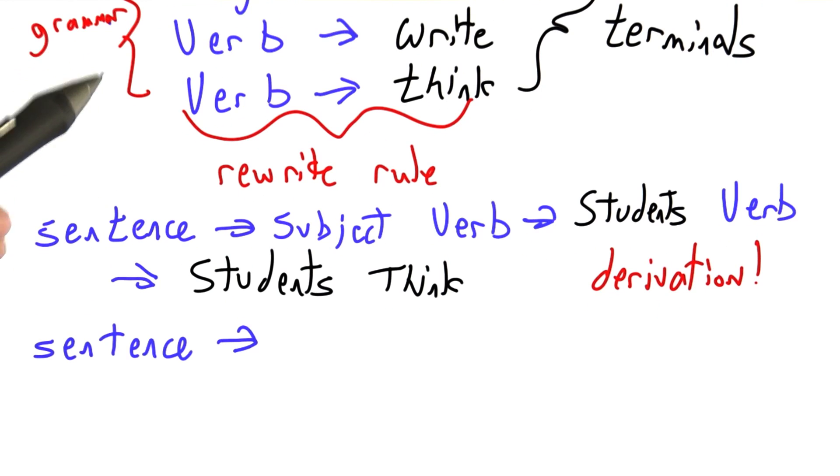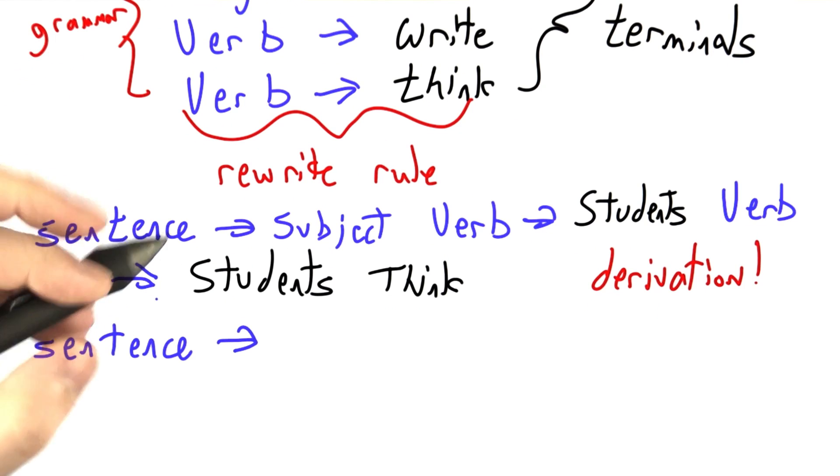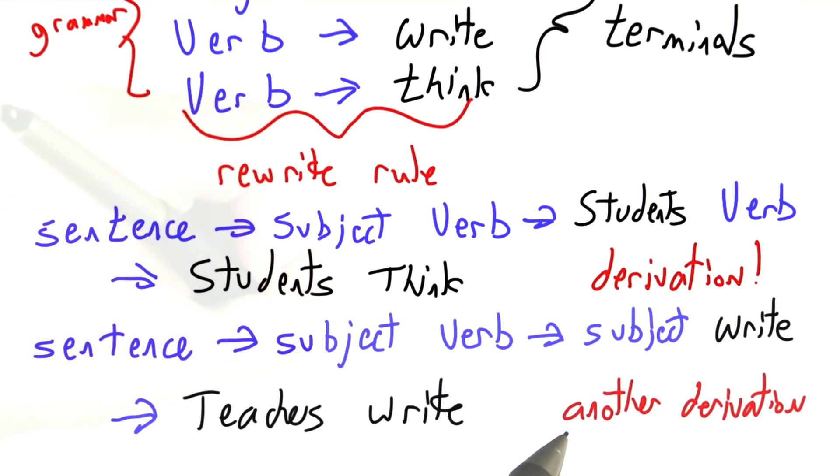Even using this relatively simple grammar, however, I have a few options. Here I've shown another derivation starting with sentence. Sentence goes to subject-verb. Verb goes to write. Subject goes to teachers. And I've produced another string in the language of the grammar. Both students think and also teachers write can be produced by that grammar.